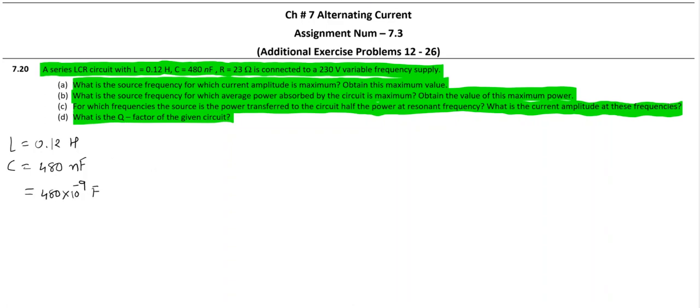R value we are given is 23 ohm. V_rms is 230 volt. Now first question A demands the source frequency for which current is maximum. Now current is maximum when resonance occurs, and resonance occurs when omega L becomes equal to 1 by omega C.